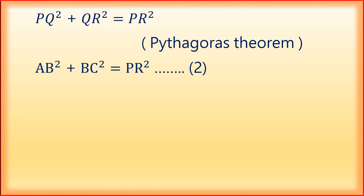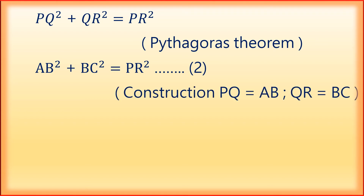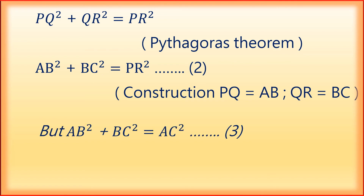How do we get equation 2? AB is equal to PQ and QR is equal to BC, by construction. Also, AB square plus BC square is equal to AC square — that is equation 3, which is given in the question.